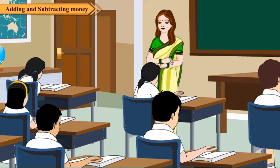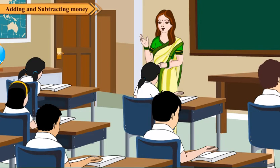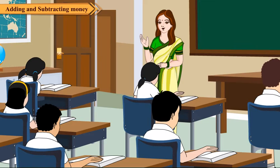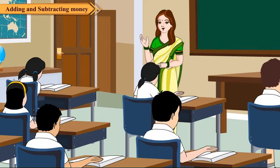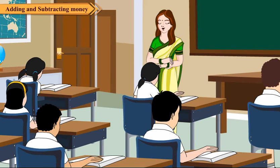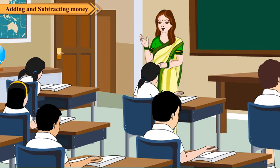Children, when we go for shopping, we buy a few number of some items. For example, we may buy four packets of chips, five bottles of coke and so on. In such a situation, we must know how to multiply the cost by the number of items bought. Let us do a problem for this.